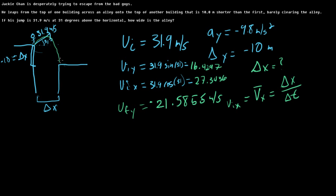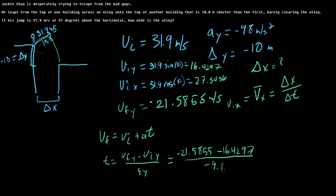Now we can find t. The easiest way is probably vf equals vi plus at, so t is just going to be vfy minus vi y over ay, so plugging in negative 21.5855 minus 16.4297 divided by negative 9.8 equals about 3.8791 seconds. This is just delta t.